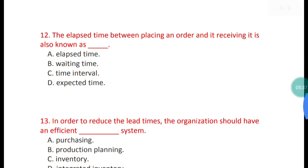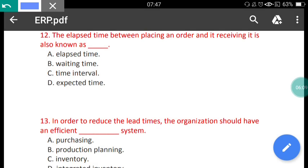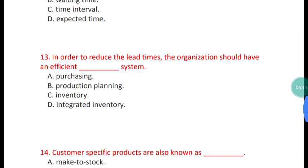Question 12: The elapsed time between placing an order and receiving it is also known as what? The options are: elapsed time, waiting time, time interval, and expected time. The correct answer is option A — it is known as elapsed time.